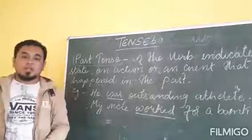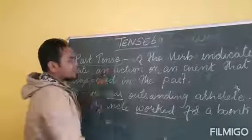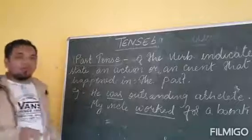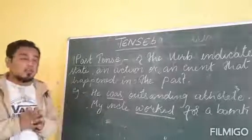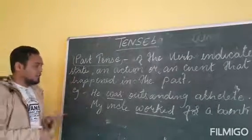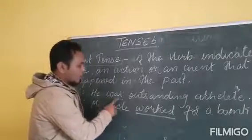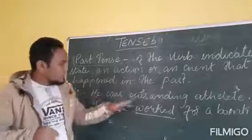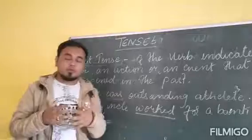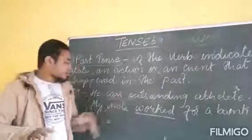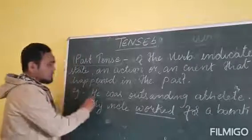So what is past tense? Past tense of the verb indicates a state, action, or event that has happened in the past — an action or event that has already happened. For example, 'He was an outstanding athlete.' Here, 'was' is the past form of 'be.' This means he was a good athlete in the past, but in the present he is not. He was outstanding before, but not now.